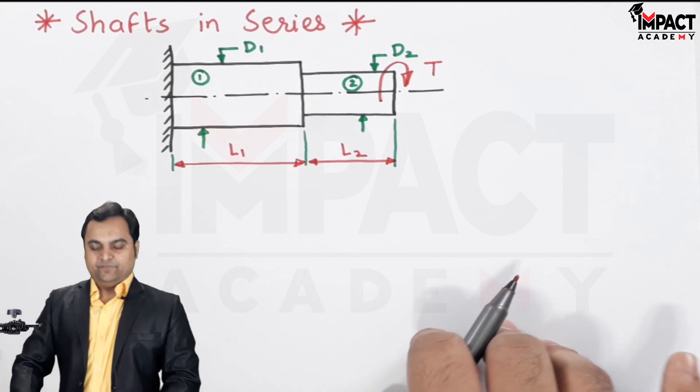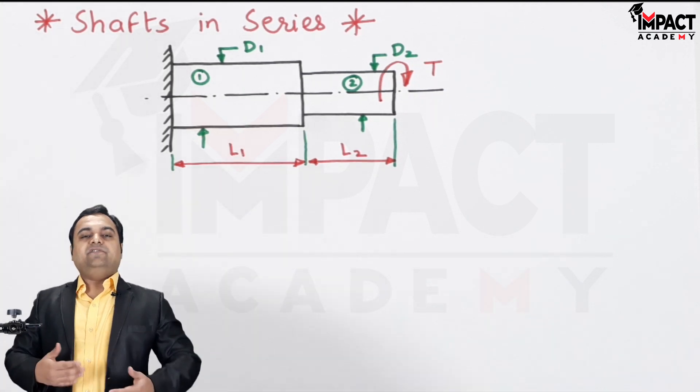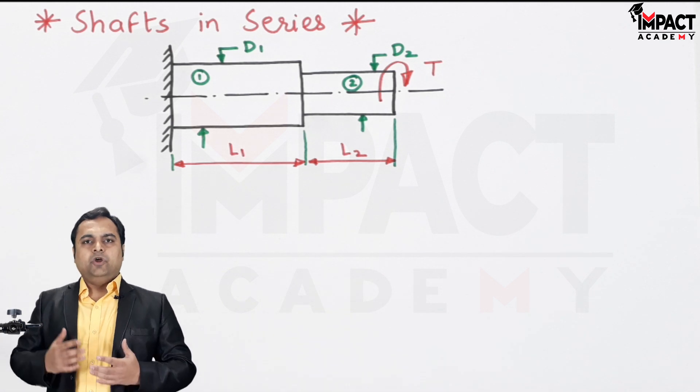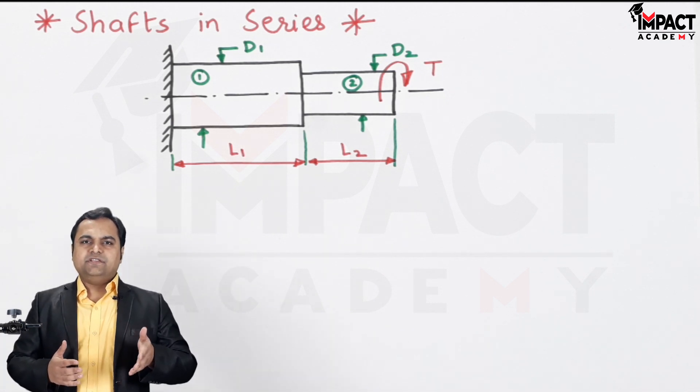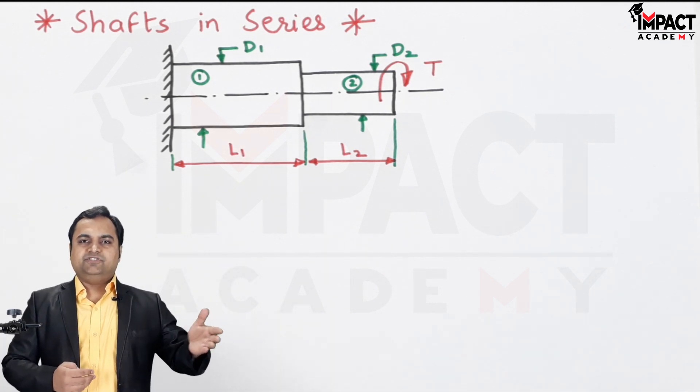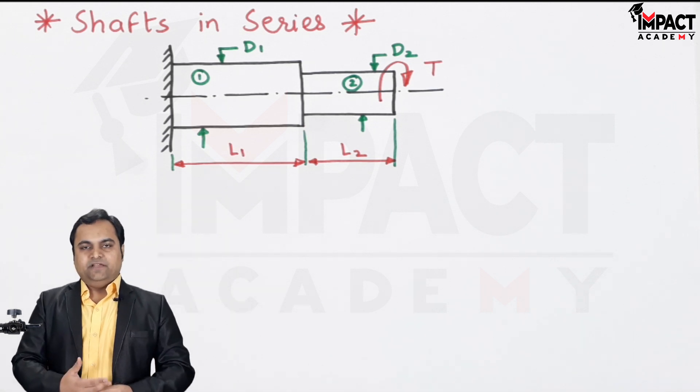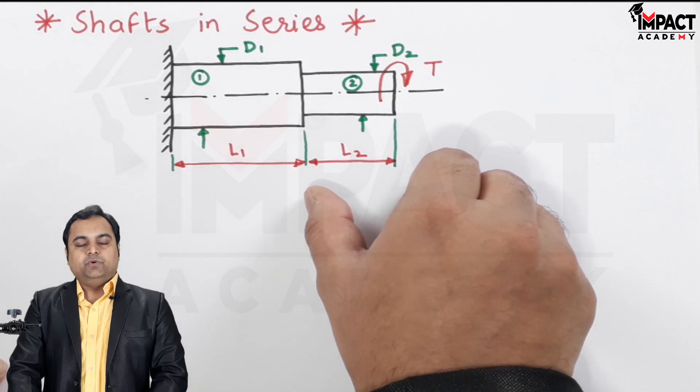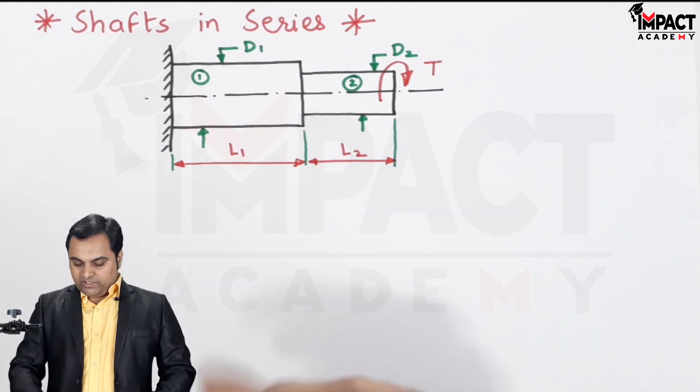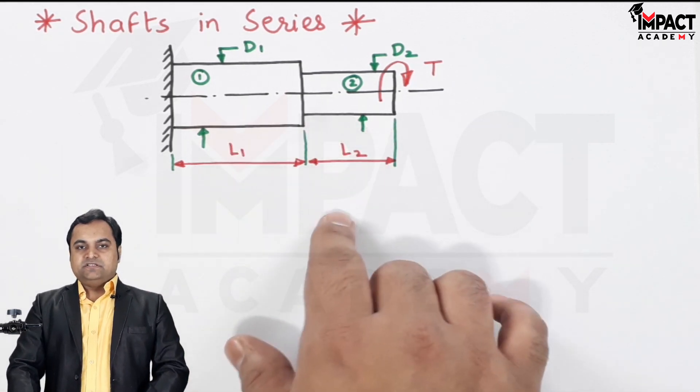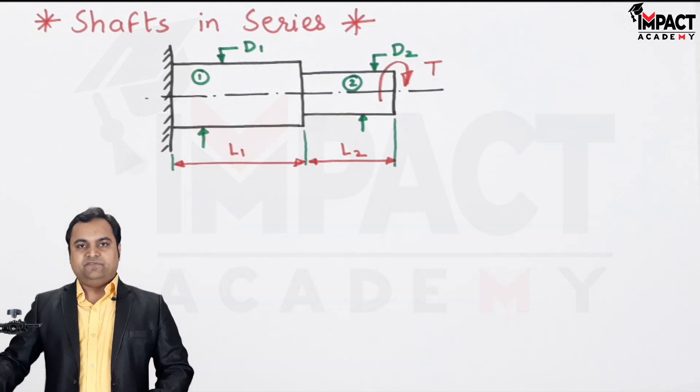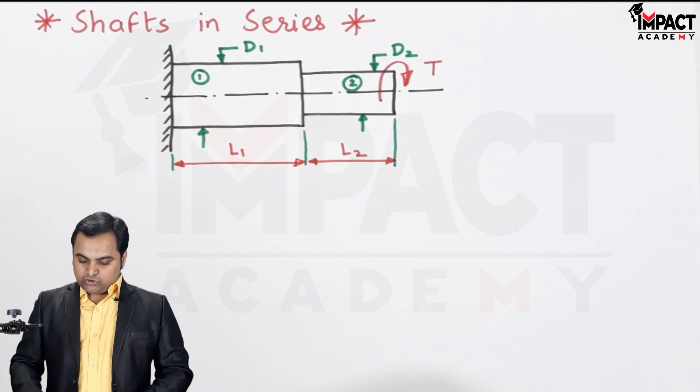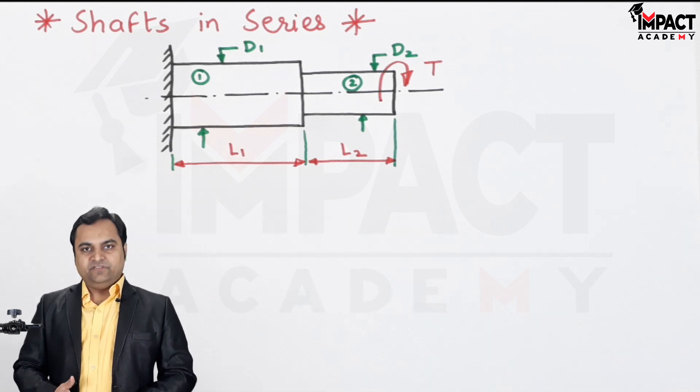Now here is the diagram for shafts in series. Shafts in series means it is a shaft which is made up of two or three stepped shafts combined together. For example, here there is a shaft having length L1 which is connected to another shaft having length L2. The diameters are different. Similarly, we can have a number of shafts in series depending upon their length and diameters connected together.